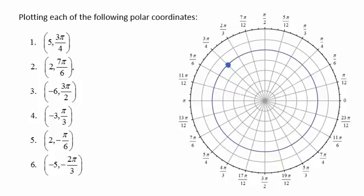2, 7 pi over 6. We'll first go to our rotation of 7 pi over 6 down here in the third quadrant. A radius of 2, we'd put it right here.